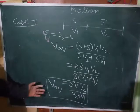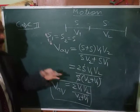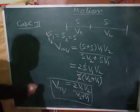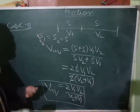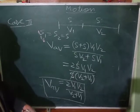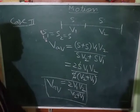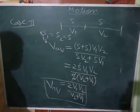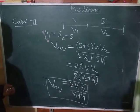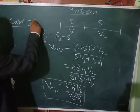You need to remember just the formula, not the derivation. I am deriving it so you know how it has arrived. So when a body travels half the distance with one speed and the remaining half with some other speed, the formula for average speed is 2·V1·V2 / (V1 + V2). It is not (u + v) / 2.